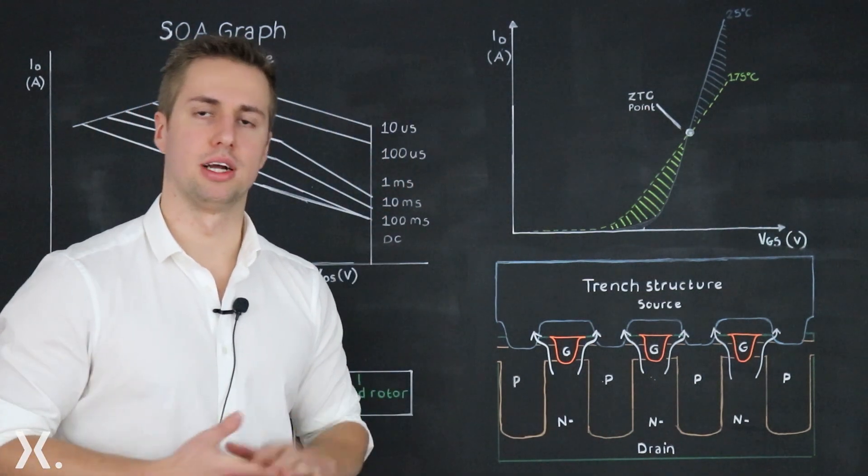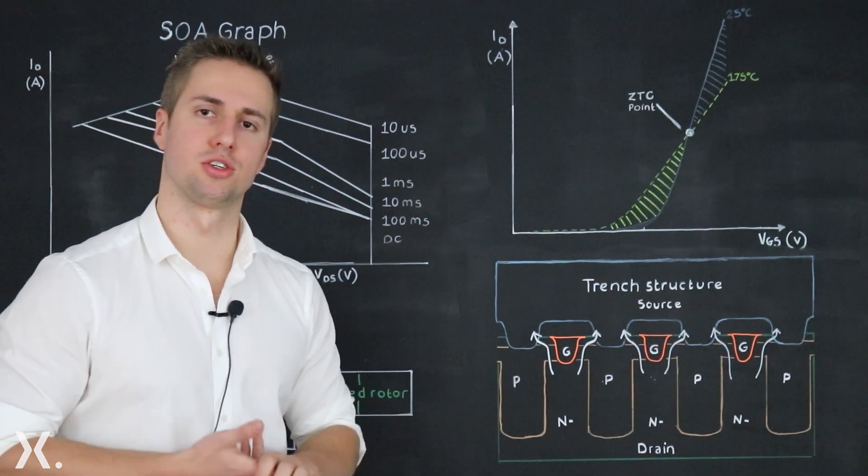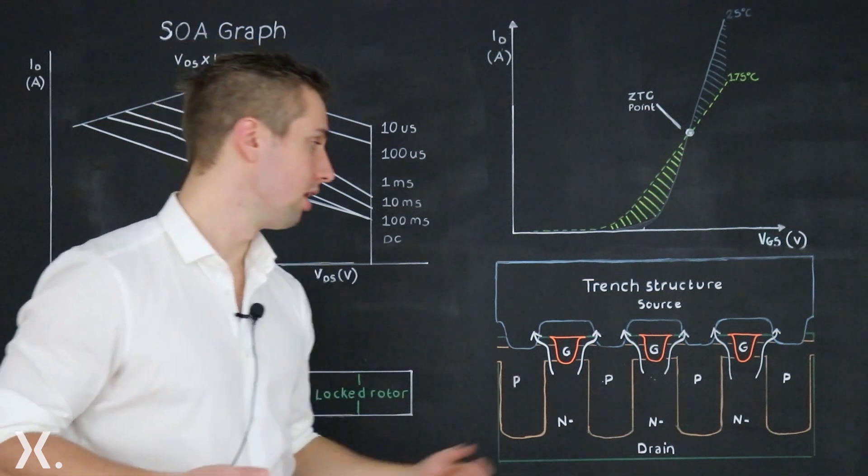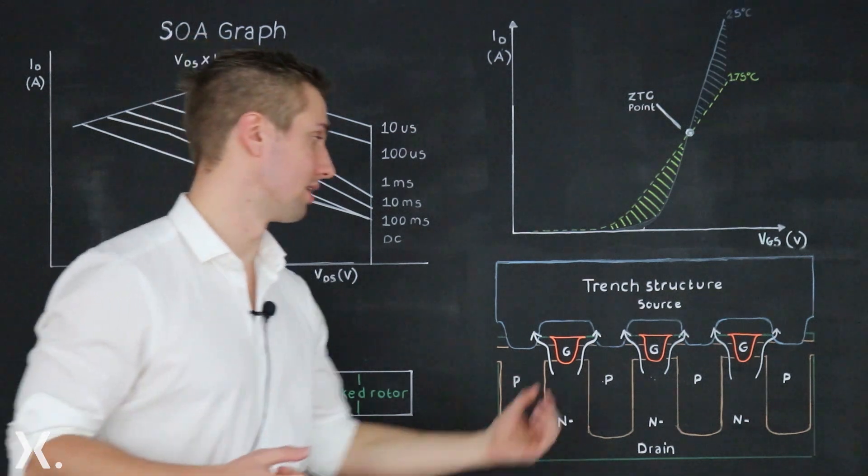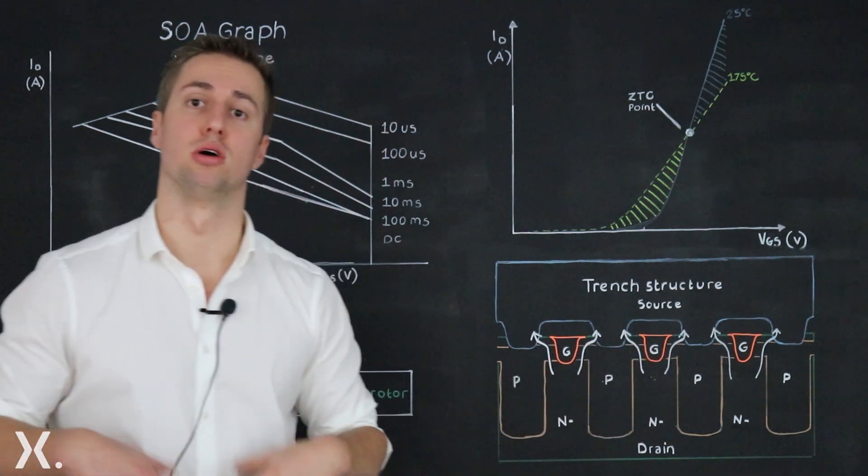Now what's important for SOA? For SOA you want very strong current carrying capability which means wider trenches, at the same time good cooling which means again wide trenches to allow for more efficient cooling.